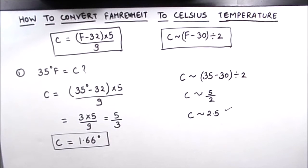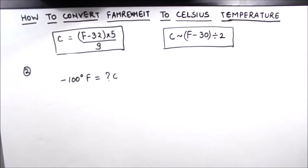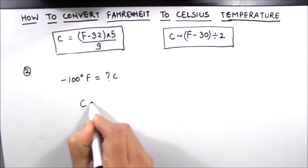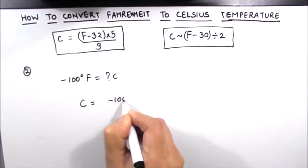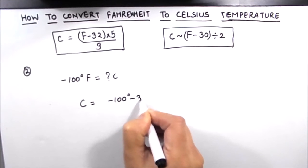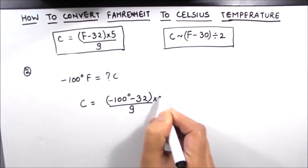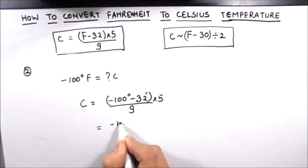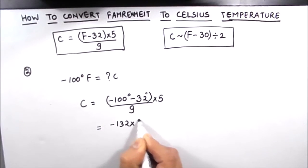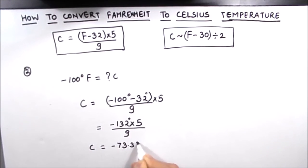Let us now solve one more example. Let us find how much is minus 100 degrees Fahrenheit in Celsius. We put the value in the formula: C equals F minus 32, so negative 100 minus 32, divided by 9, times 5. Negative 100 minus 32 equals negative 132, times 5, divided by 9, which equals negative 73.33 degrees Celsius.